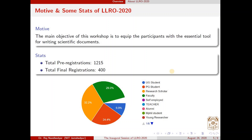Now because this motive has already been accomplished, I hope the main objective — which is to learn LaTeX for scientific writing — will also be accomplished by the end of this workshop. We have received a total of 1215 pre-registrations, out of which 400 participants finally confirmed their registrations. We are thankful to these 400 confirmed participants who joined us for this noble cause.